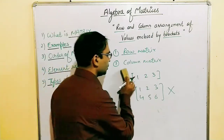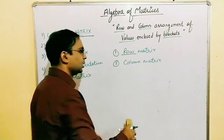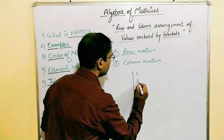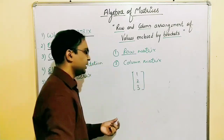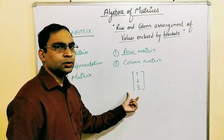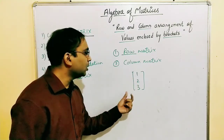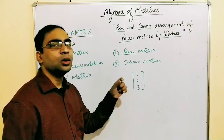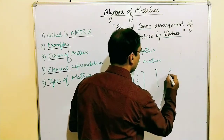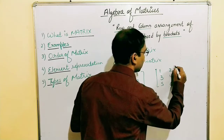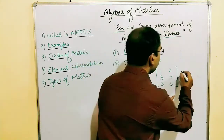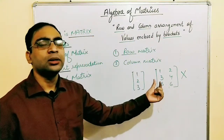Similarly, the column matrix is the opposite: a matrix with one column only, but any number of rows. For example, a matrix with elements 1, 2, 3 arranged vertically has only one column and multiple rows — so this will be a column matrix. But if I write a matrix with elements 1, 2, 3, 4, 5, 6 with more than one column, that will not be a column matrix.